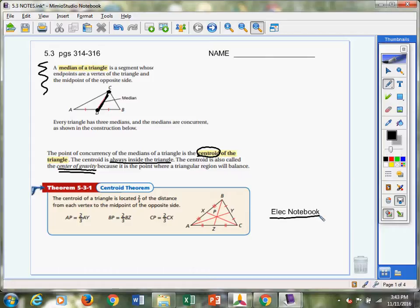Now, the centroid of a triangle is located two-thirds of the distance from each vertex to the midpoint of the opposite side. That probably did not make a lot of sense. Remember, let me just take, for example, CX. This one highlighting right here is CX. That is a median.